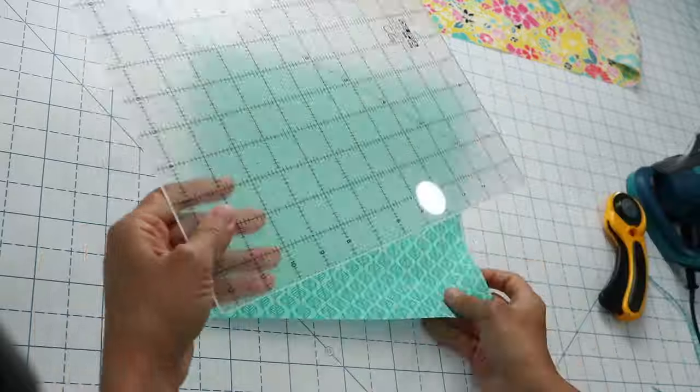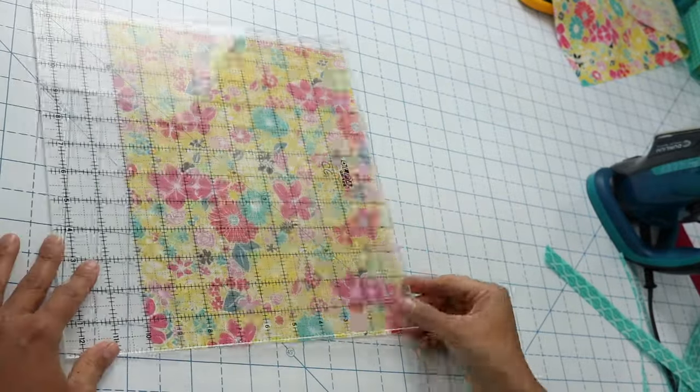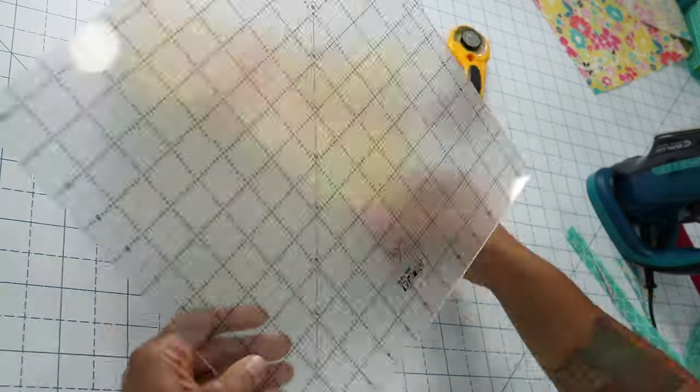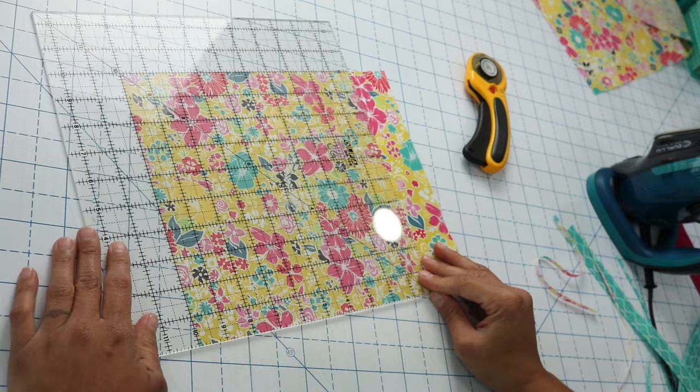Next we cut a 10 inch by 10 inch square from each of the two different fabrics. This is my lining and this yellow floral will be for my exterior. For those of you that are quilters and maybe have some pre-cut 10 inch squares on hand, just grab a couple of those.